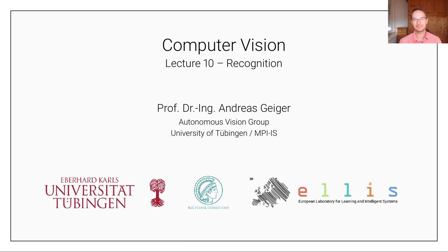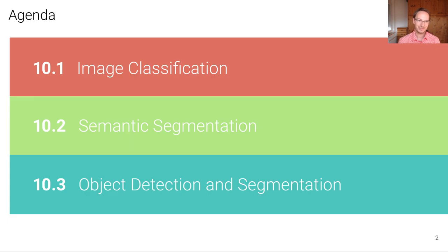Hello and welcome to computer vision lecture number 10. In the past lectures we have focused a lot on the geometric aspects of computer vision. Now in this lecture we're going to touch on another important subfield: recognition — recognizing objects. It's a very data-driven field which has benefited a lot from the advances brought by the rise of deep learning over the last 10 years. This lecture is divided into three units: image classification, semantic segmentation, and object detection and segmentation.